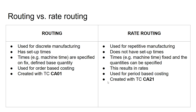If you want to create a rate routing, the transaction code is CA21, which is different from the CA01 used for standard routings. I hope this was helpful — this was a rough overview of routing types and routing creation. In following videos I am going to be explaining routings in greater detail, focusing on other aspects of routing master data in SAP.